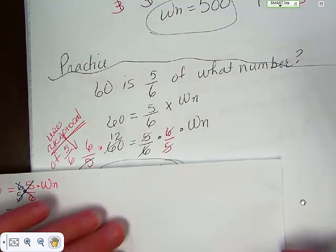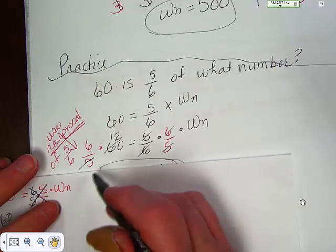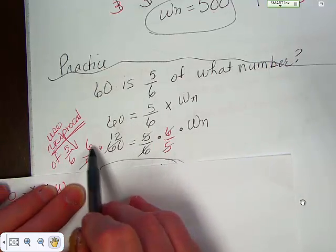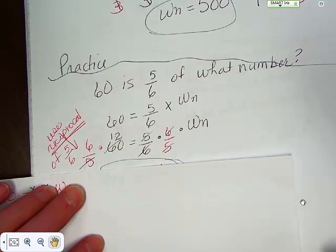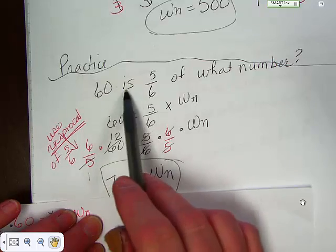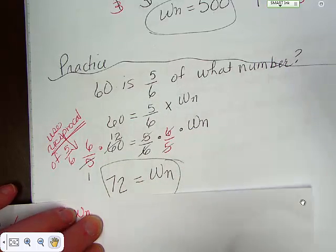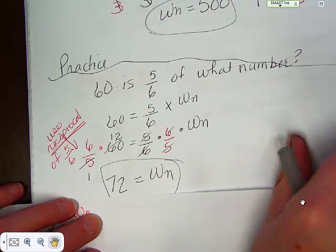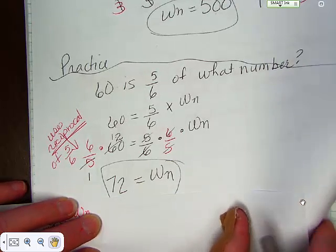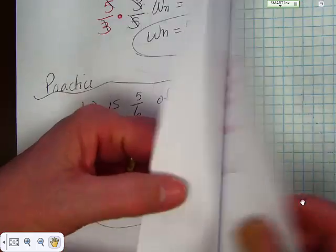And it looks like five goes into 60 twelve times, and then you would just take six times 12, and that would give you the number 72. So, 60 is five-sixths of 72, and you can prove that by simply taking five-sixths times 72, and you would get 60. Now, a couple more little practice problems.